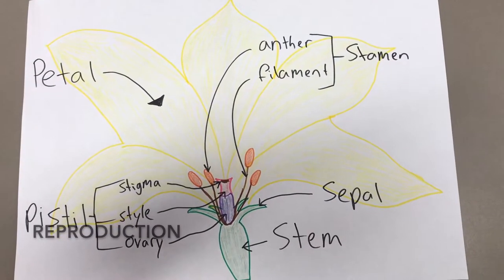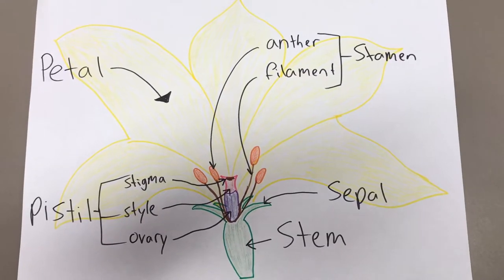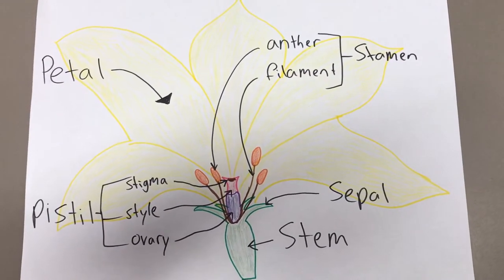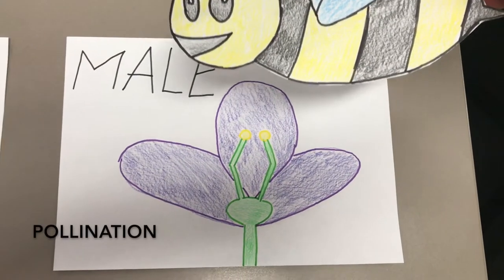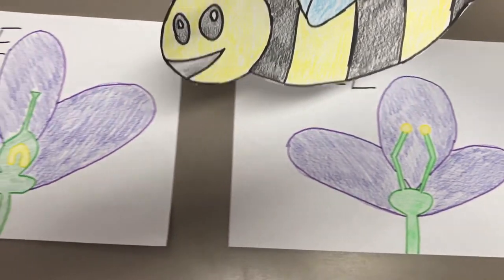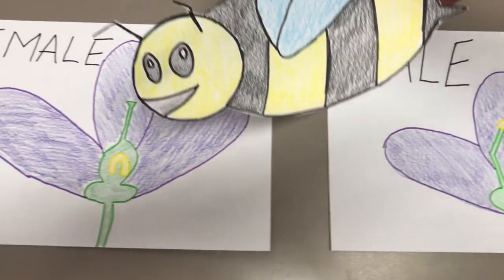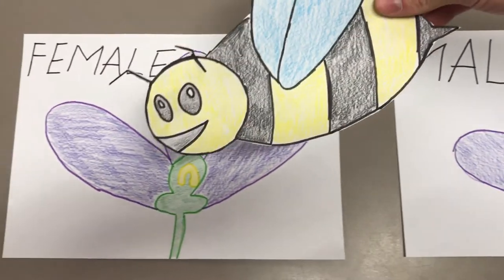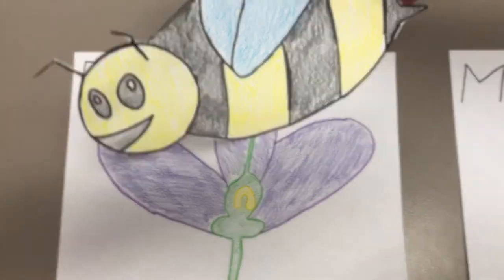What you see here is the sexual reproductive part of the plant. Sunflowers depend on insects to carry pollen from one male flower to the female flower.